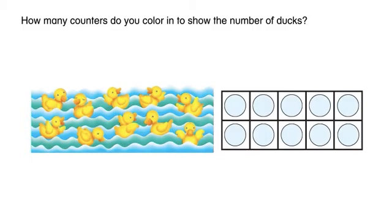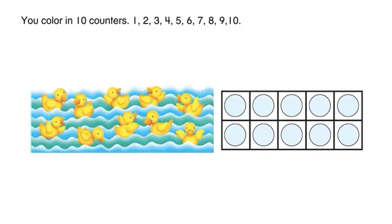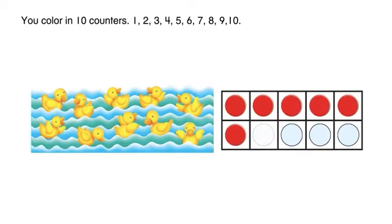How many counters do you color in to show the number of ducks? You color in 10 counters. 1, 2, 3, 4, 5, 6, 7, 8, 9, 10.